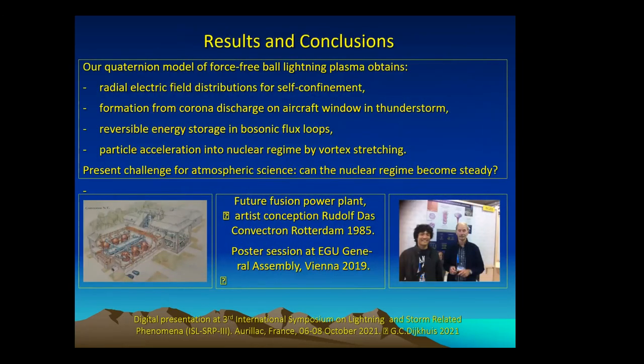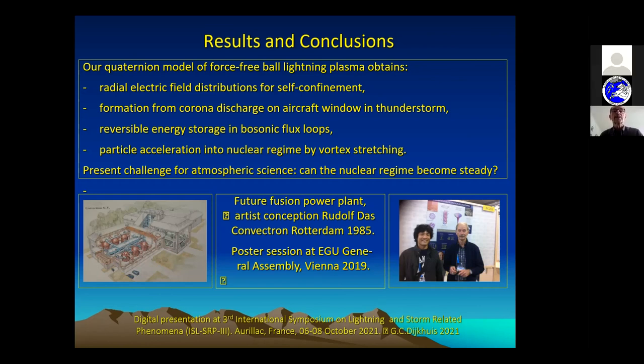Yes, I come to my conclusion. I have a quaternion model for force-free ball lightning. And we obtain from it the fields—we find radial electric field distributions which serve for self-confinement. This is like swearing in the church, as we say, for the people that do magnetohydrodynamics. But this is what I find for ball lightning. Then for formation, I have calculated from corona discharge on aircraft window in a thunderstorm. I find that this is reversible, that the ball lightning can store reversible energy in bosonic flux loops.